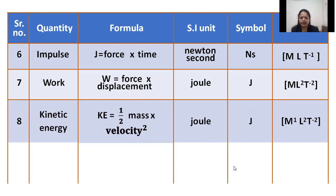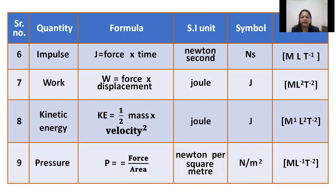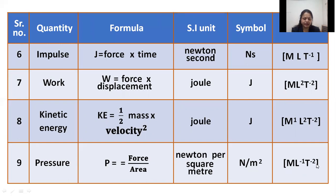For energy, once you derive kinetic energy as half mv², we need not re-derive potential energy or other forms — work and kinetic energy both have the same dimensions since work is also a form of energy. For pressure, we use force upon area. Since area is meter squared, dividing force dimensions by L² gives dimensions M raised to 1, L raised to minus 1, T raised to minus 2.